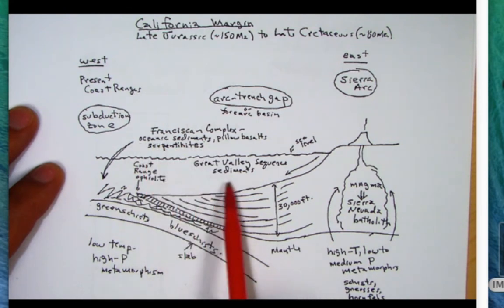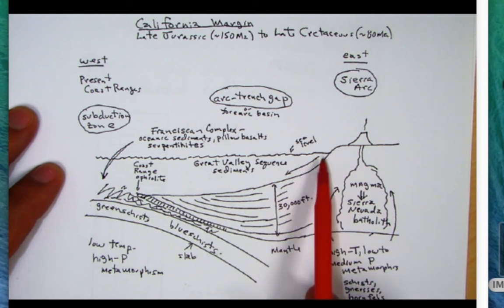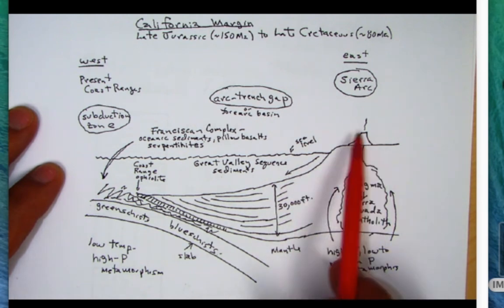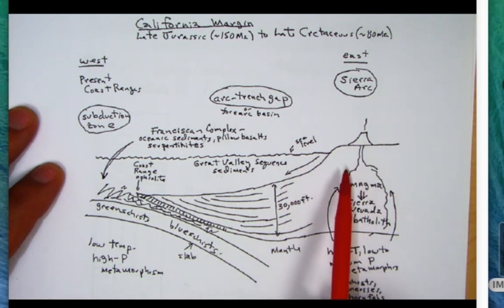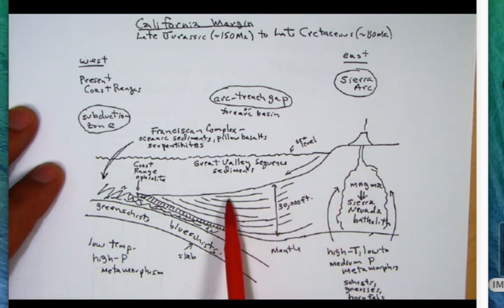That was forming here in the Sierra arc. We're going to see a thick pile of sediment and that's going to be our Great Valley Sequence. We'll talk more about this sequence later on.